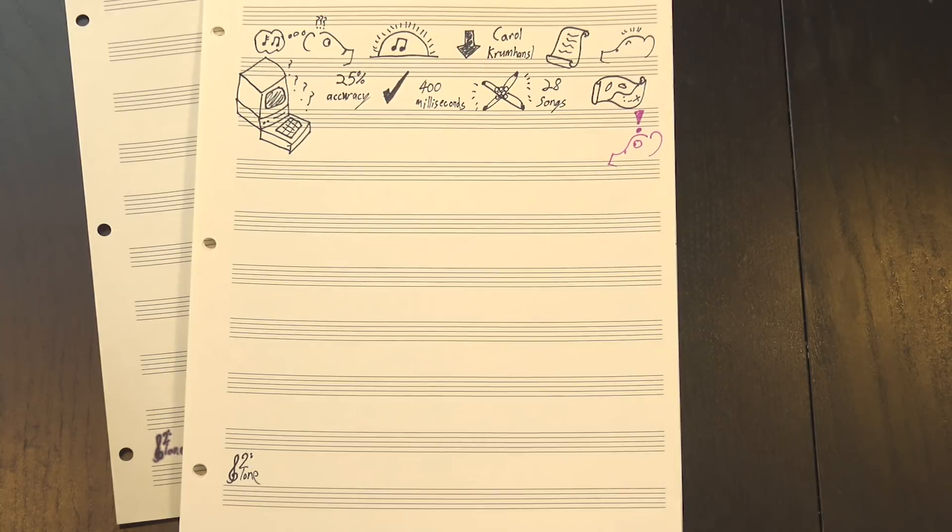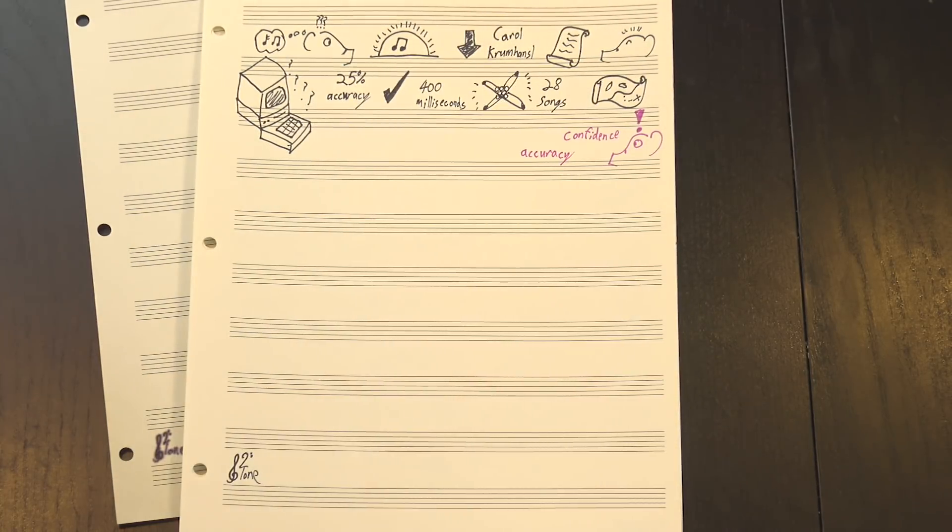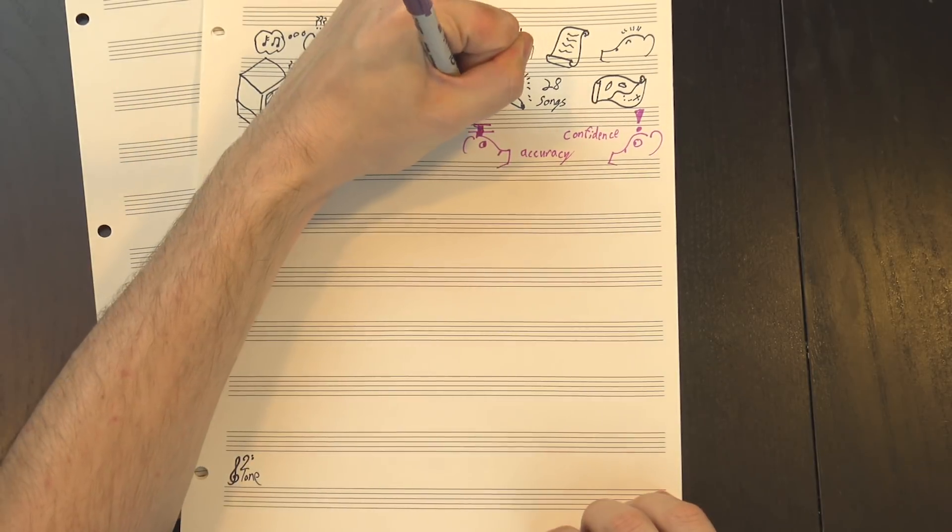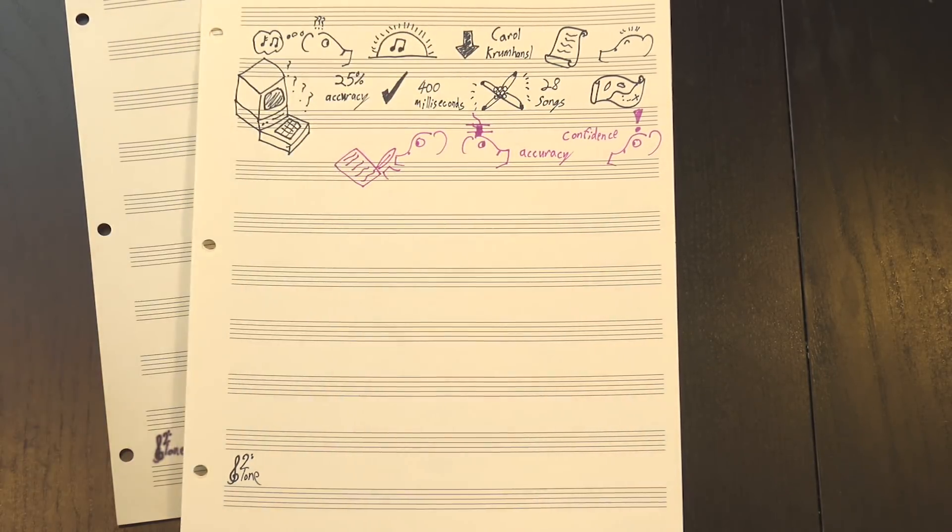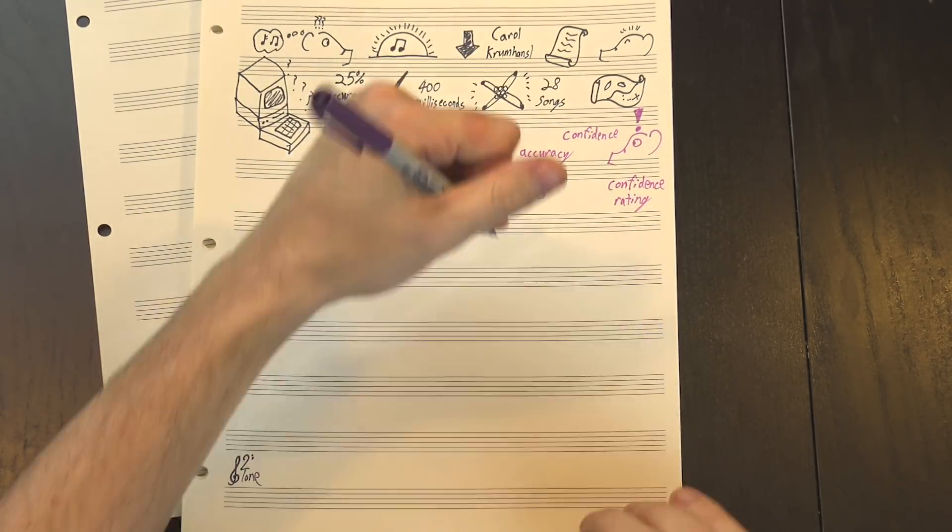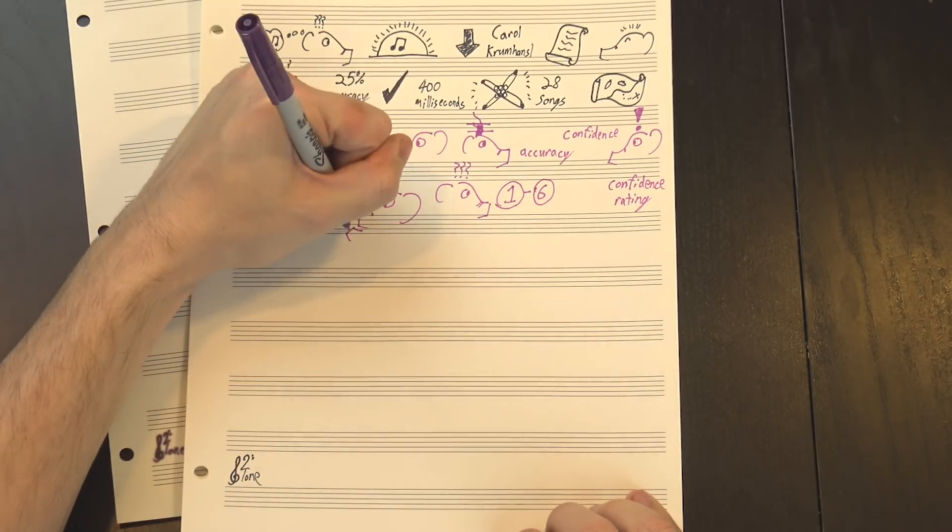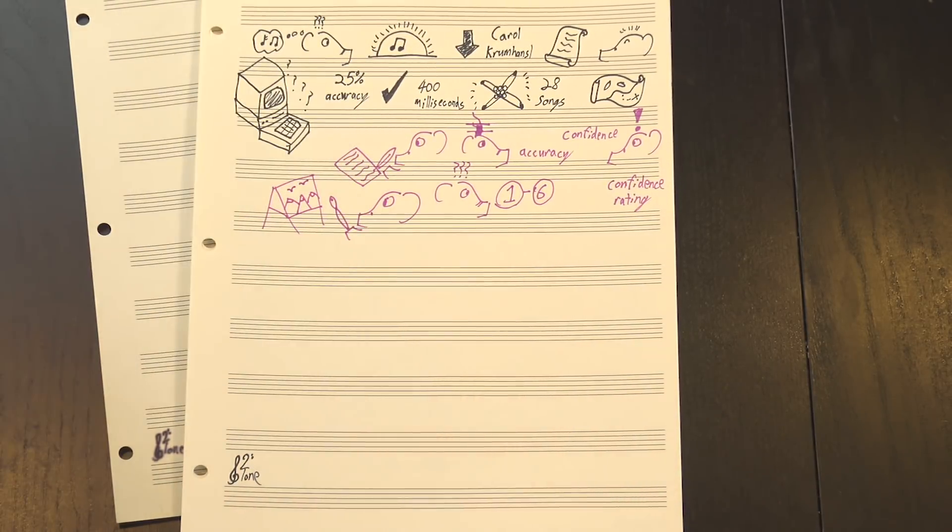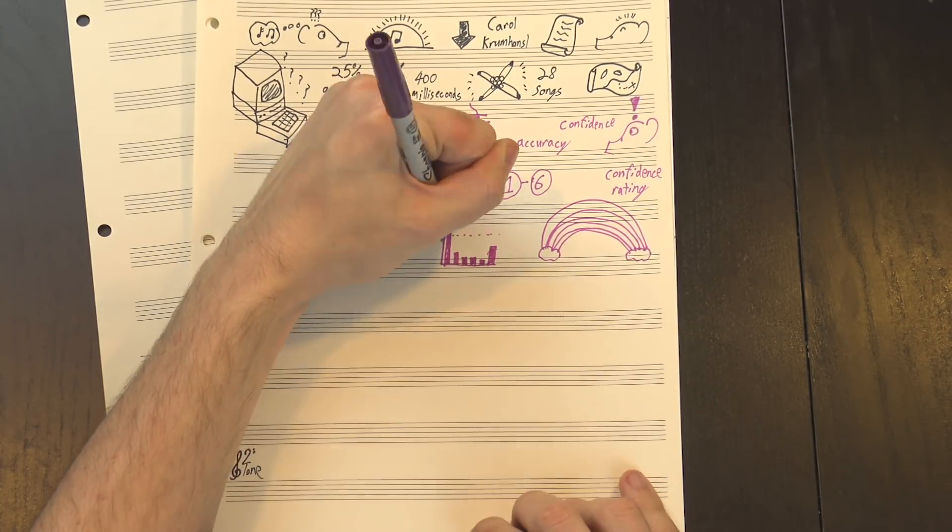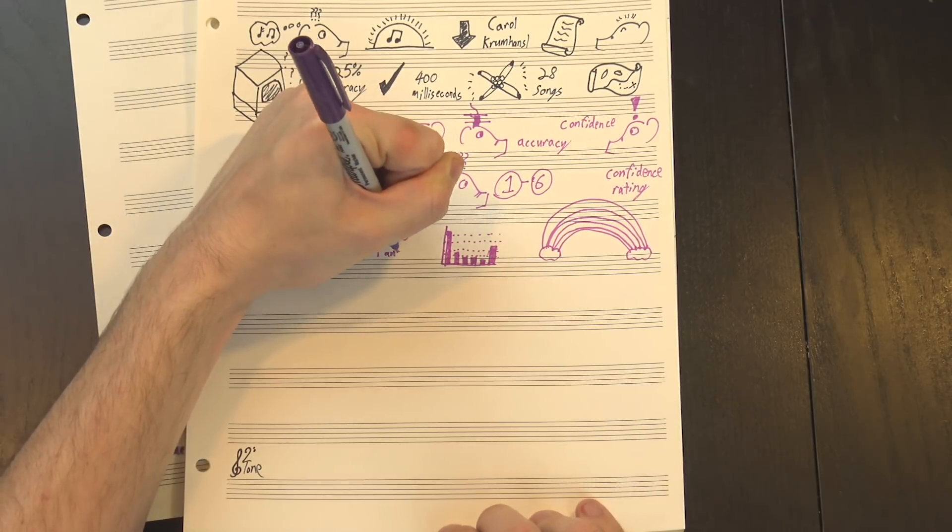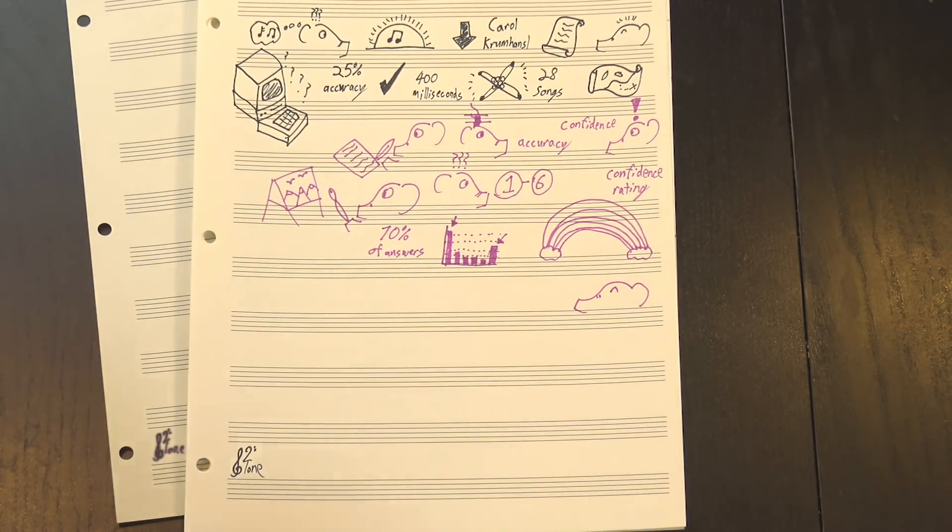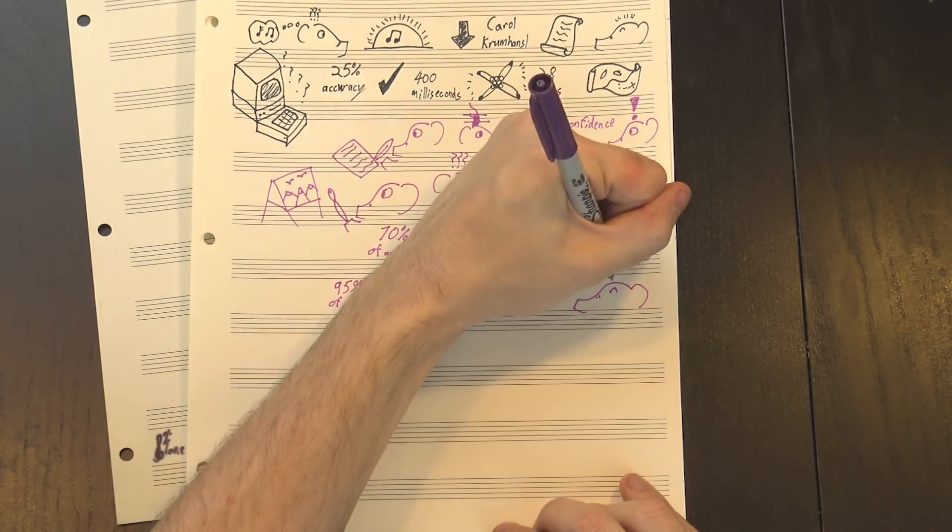One interesting result was a strong correlation between confidence and accuracy. That is, when a test subject knew the song, they also knew that they knew it. After giving an answer for each song snippet, the subjects would give a confidence rating from 1 to 6, with 1 being no idea and 6 being I definitely know both the title and the artist. Despite having shades of grey on the scale, 6 to be exact, there were clear clusters at the extremes. Roughly 70% of answers were marked with either a 1 or a 6, and that confidence was justified. About 95% of 6's had the correct answer, and 97% of correct answers were marked with a 6.